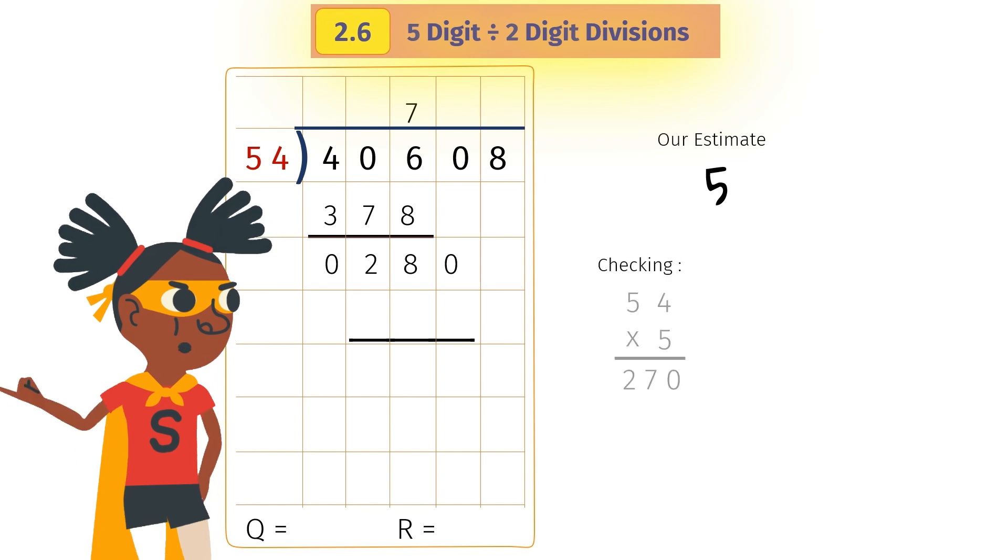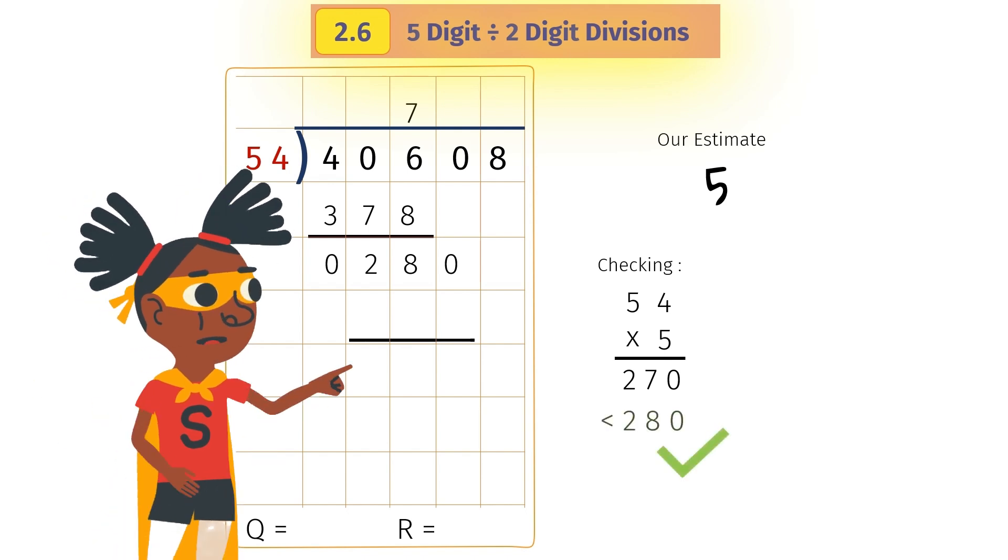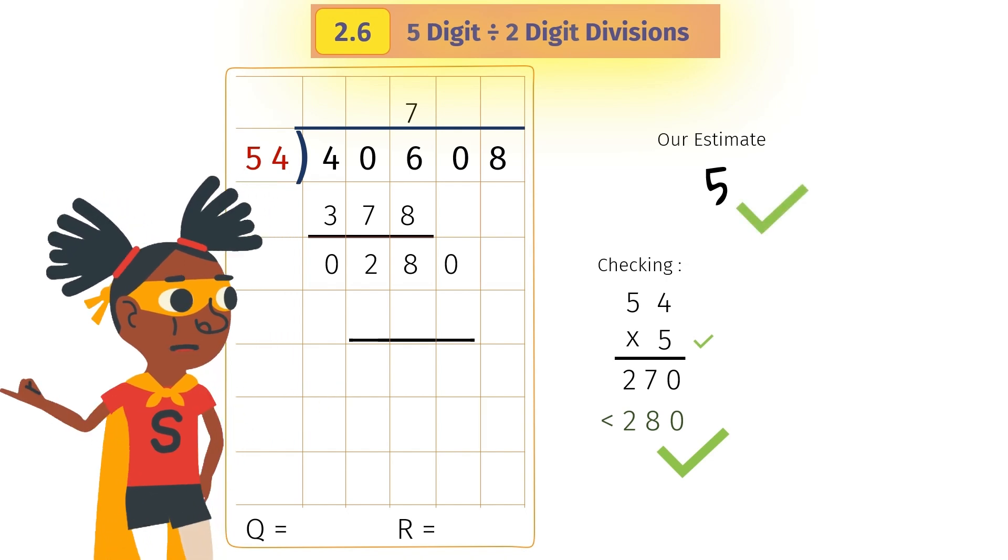Again, we check our estimate 5 by multiplying with 54. We get 270. It is less than 280, so we shall use 5.